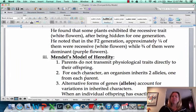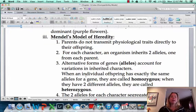So he started to do some numbers to it, and he came up with a couple of these ideas. First one is that parents don't transmit physiological traits directly to their offspring. You're going to get a mix of mom and dad, right? You're not going to just get a clone of mom or a clone of dad.